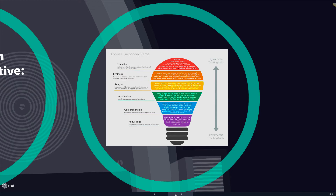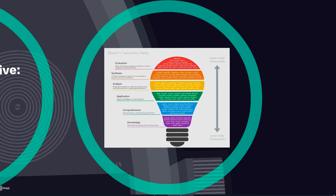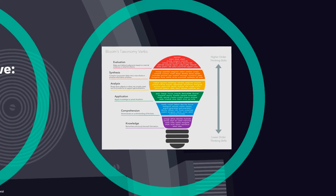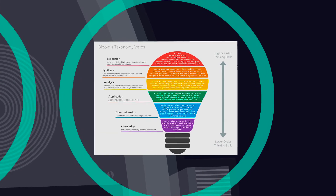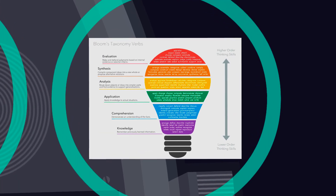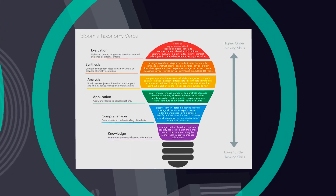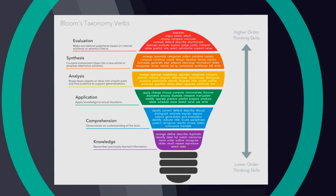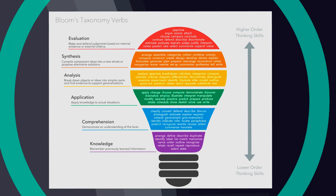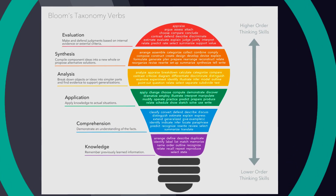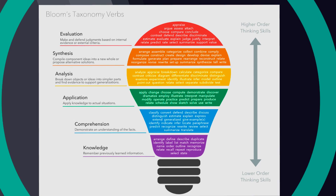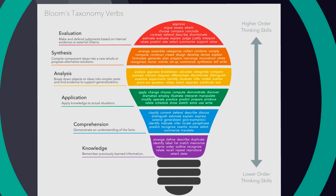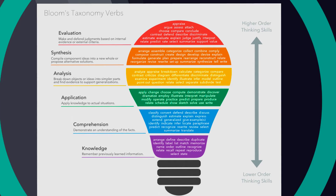Bloom's taxonomy is a hierarchy of six cognitive skills ranging from less to more complex. The lowest order thinking skills are grouped under knowledge — activities related to remembering information. The thinking skills increase in complexity as you move up the taxonomy through comprehension.